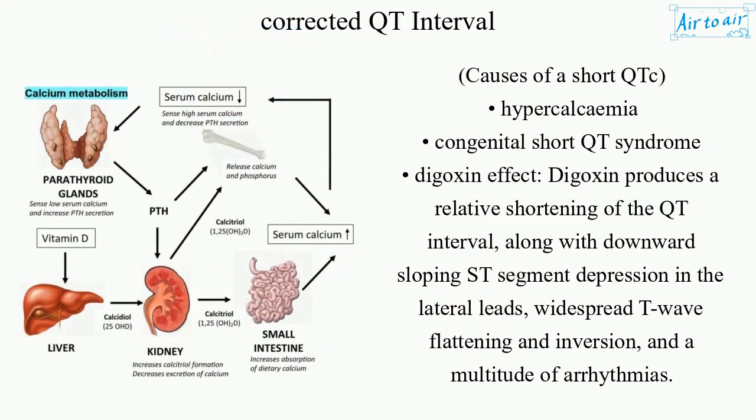Causes of a short QTc: hypercalcemia, congenital short QT syndrome, and digoxin effect. Digoxin produces a relative shortening of the QT interval along with downward-sloping ST segment depression in the lateral leads, widespread T-wave flattening and inversion, and a multitude of arrhythmias.